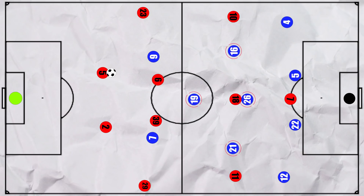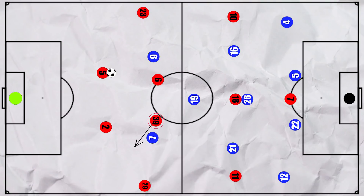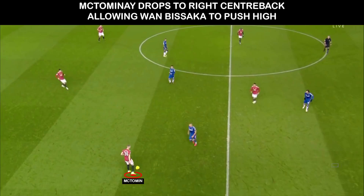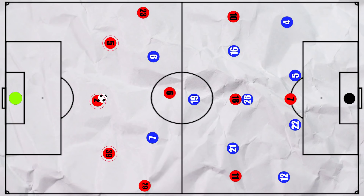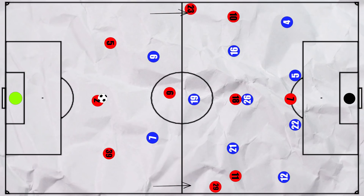The diamond naturally meant that Everton were light in the wide regions, and United looked to take advantage, with Scott McTominay triggering this by dropping into the right centre-back position. With the three centre-backs split across the width of the pitch, Wan-Bissaka and Shaw could both push higher. This is shown in their average positioning.